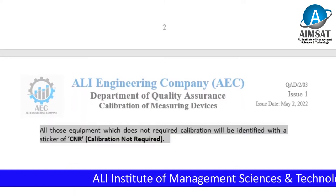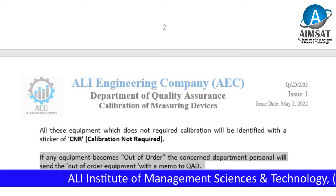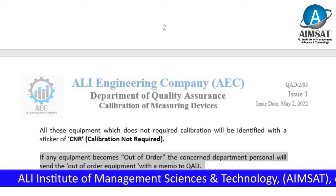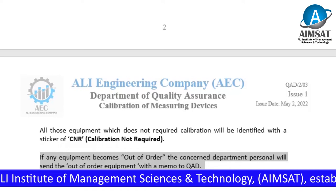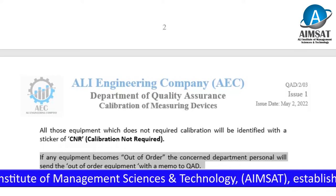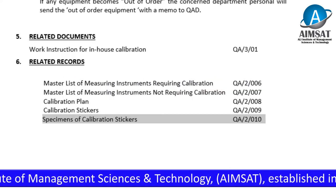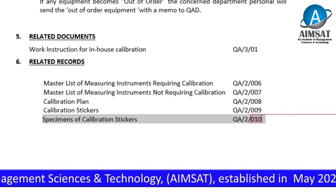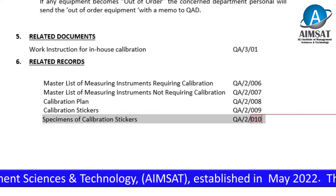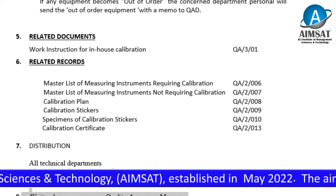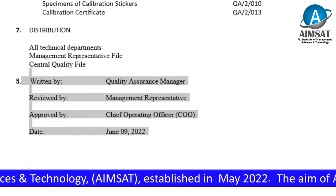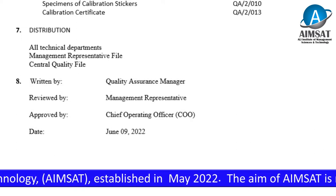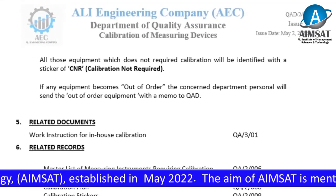All in-house calibrations are carried out in accordance with the workstation for in-house calibration. Equipment not requiring calibration is identified with a CNR (Calibration Not Required) sticker. If any equipment becomes out of order, the concerned department personnel will send the out-of-order equipment with a memo to QA. Related documents include: workstation for in-house calibration, master list of measuring instruments requiring calibration, master list of measuring instruments not requiring calibration, calibration plan, calibration stickers, specimen of calibration stickers, and calibration certificates.